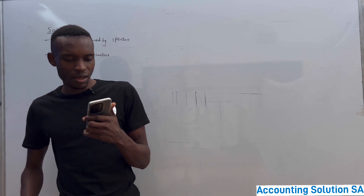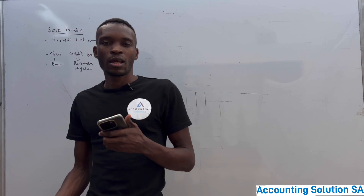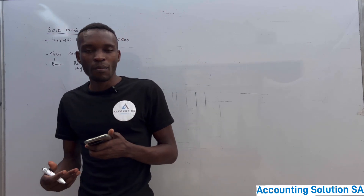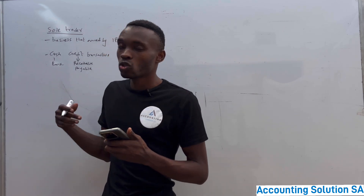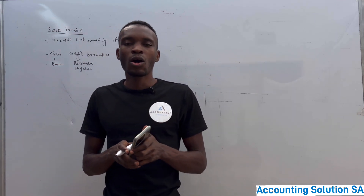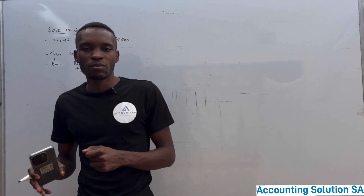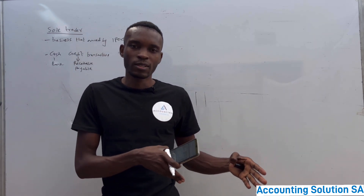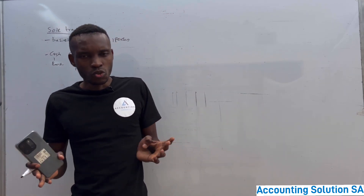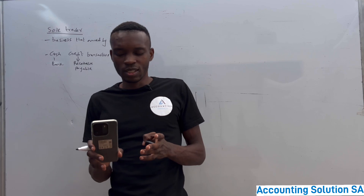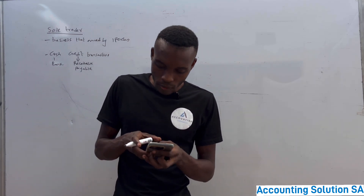After week three, you are going to learn debtors and creditors reconciliation — that is chapter two. In this chapter you are going to learn how to reconcile: you will be given two statements, which are the bank statement as well as the ledger account of the business, and you have to make sure that those two accounts have the same transactions and the same balance.